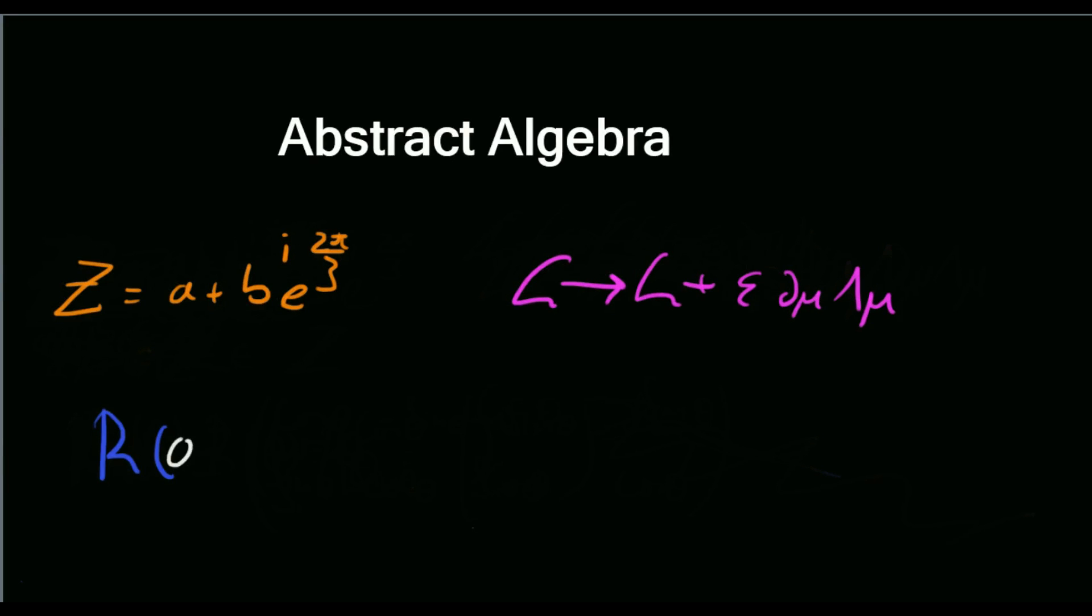Well, group theory is a subsection of an area of maths called abstract algebra. Roughly speaking, abstract algebra is concerned with the study of mathematical objects and structures. The ones we're going to look at today are groups.